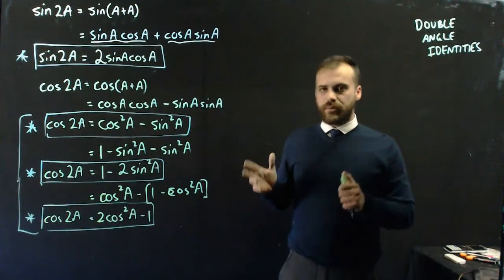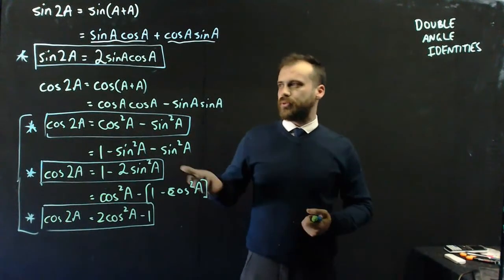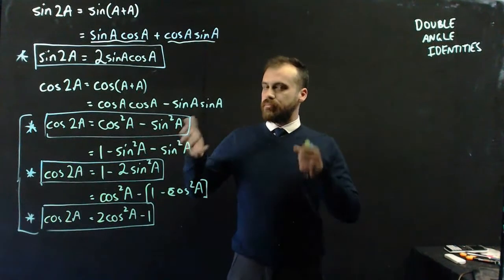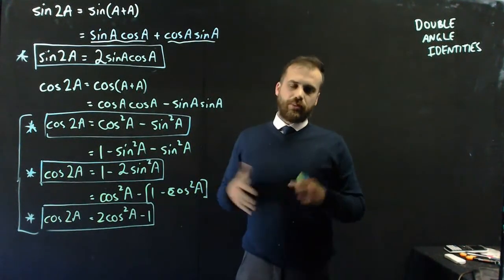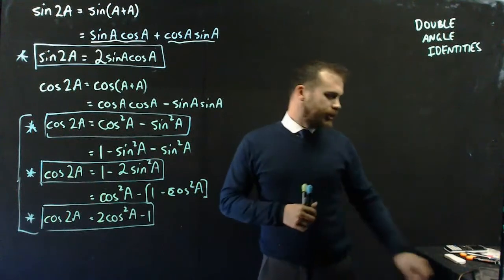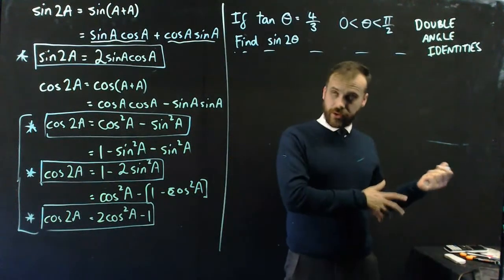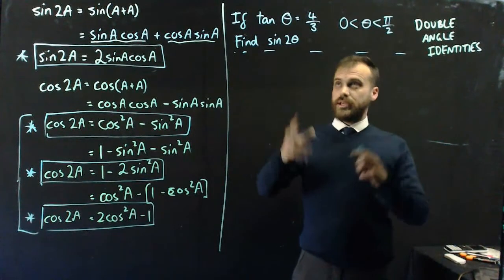As usual, only someone very cruel and very unusual would force you to memorize all of these identities. They'll probably appear on a formula sheet, something like that. Of course, we can use this identity and other ones that we already know to solve questions. Here's one.